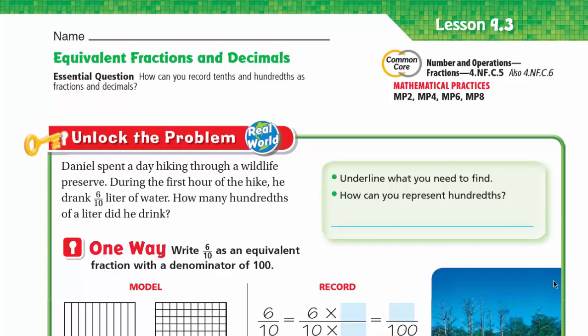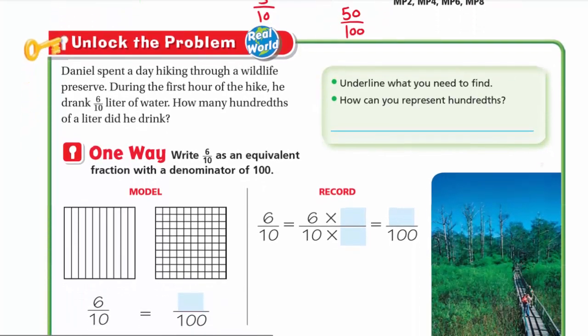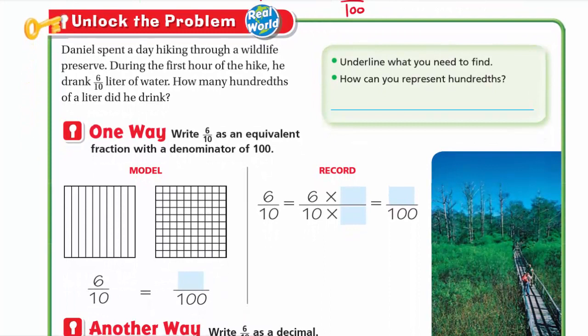Hello, this is Mr. Ahmed and today we'll do lesson 9.3: equivalent fractions and decimals. Our essential question is: how can you record tenths and hundredths as fractions and decimals? In this lesson, we'll learn how to convert three tenths to hundredths, and how to write 50 hundredths as tenths, in both fractions and decimals.